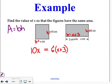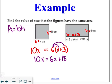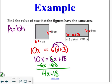Next thing we have to do, since we have grouping symbols, is the distributive property. So, I end up with 10x is equal to 6x plus 18. Combining our variables, we have to subtract 6x from both sides, which gives me 4x is equal to 18.